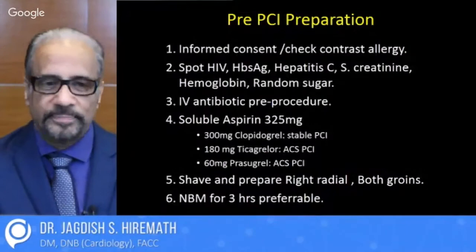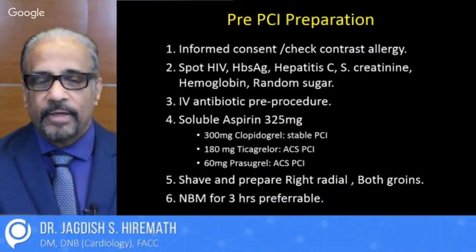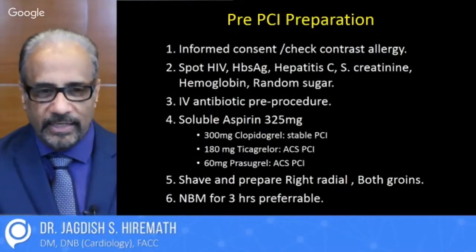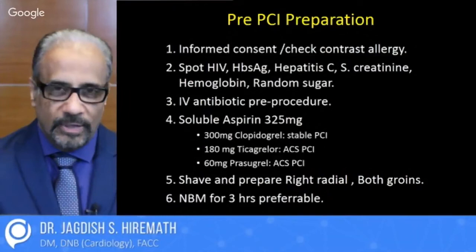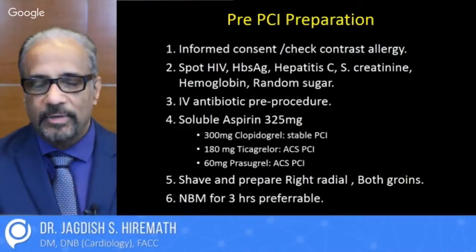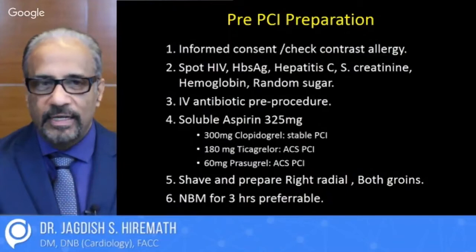Before an angioplasty, the preparation is like any other procedure. You have to get an informed consent, check for contrast allergy, a spot HIV test, HBsAg test, hepatitis C, serum creatinine, hemoglobin, random sugar — all need to be done ideally. Intravenous antibiotic pre-procedure, just one shot, is good enough. Soluble aspirin 325 mg, 300 mg of clopidogrel or 180 mg of ticagrelor or 60 mg of prasugrel are given based on the patient. Prepare the right radial on both groins and of course, preferably nil by mouth for three hours before the procedure.